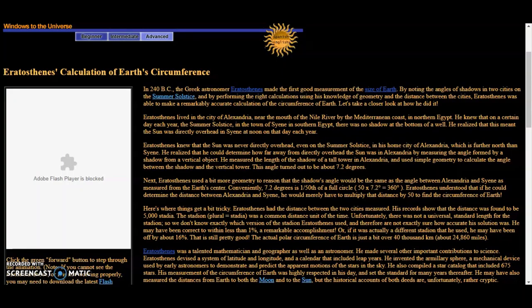Now almost all the websites that cite Eratosthenes experiment say the same thing. And for distance, just read this paragraph. Here's where things get a bit tricky. Eratosthenes had the distance between the two cities measured. His records show that the distance was found to be 5,000 stadia.